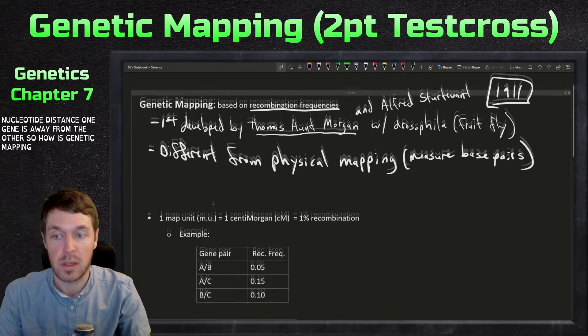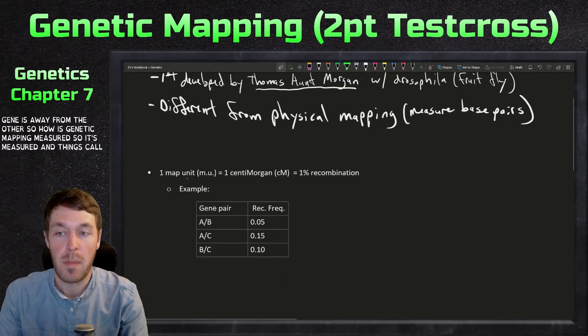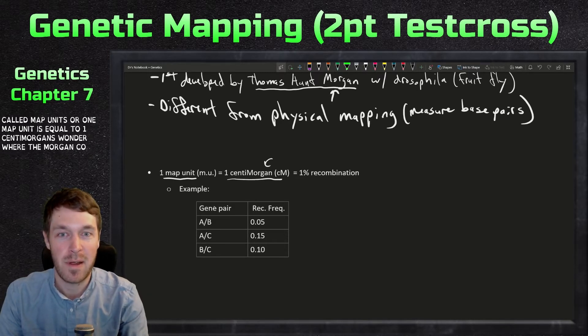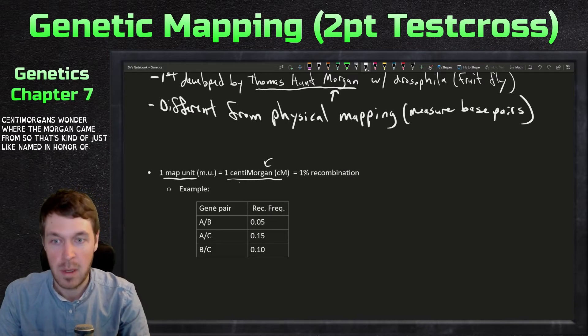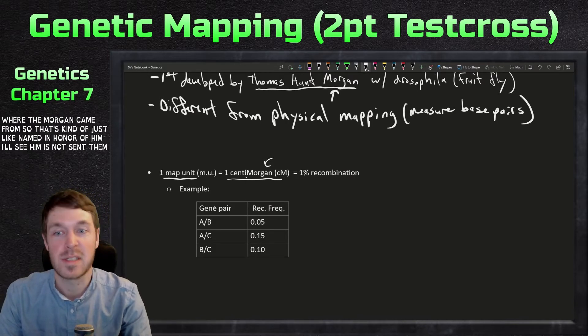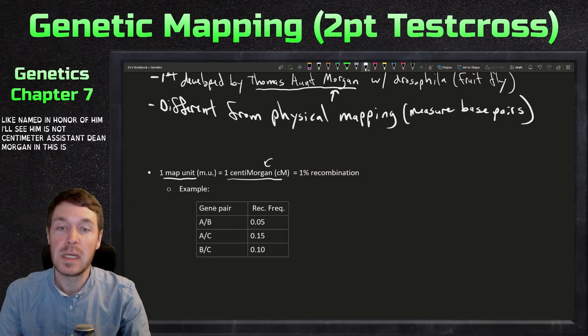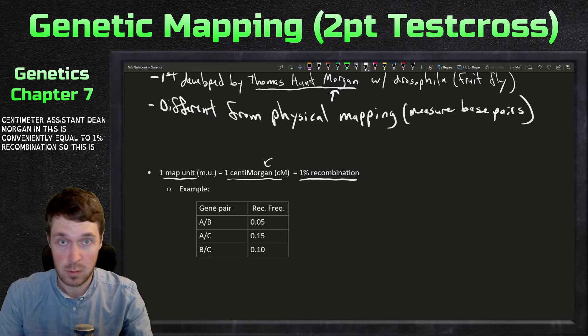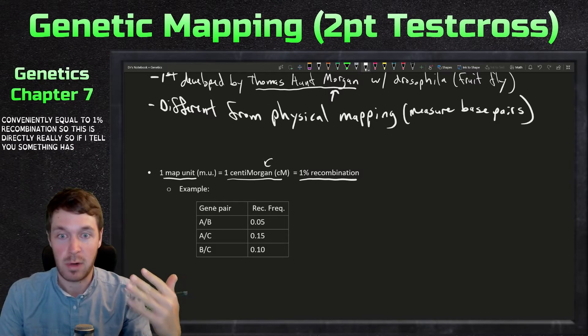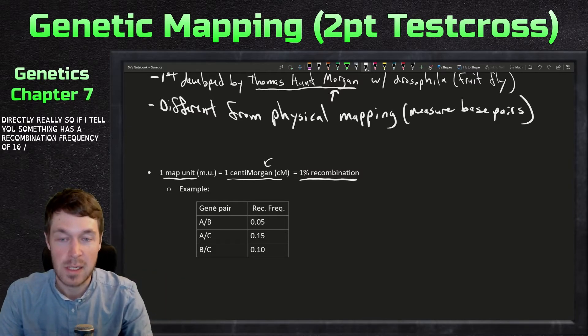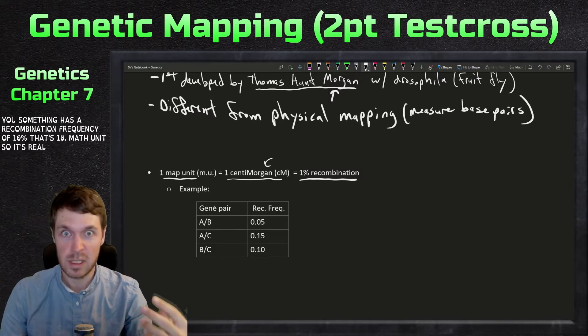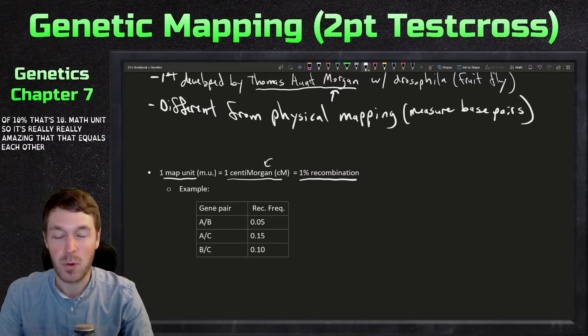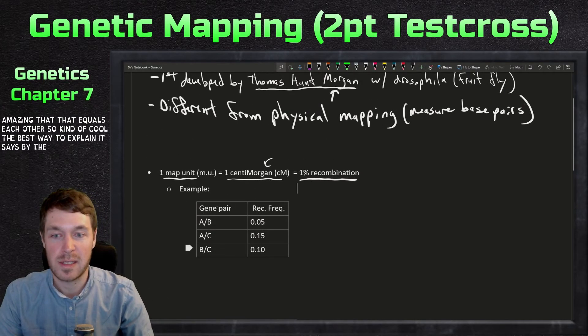So how's genetic mapping measured? It's measured in things called map units. One map unit is equal to one centimorgan—wonder where the Morgan came from—kind of just named in honor of him. CM is not centimeter. It's a centimorgan. And this is conveniently equal to 1% recombination. This is directly related. If I tell you something has a recombination frequency of 10%, that's 10 map units. So that's really amazing that they equal each other.